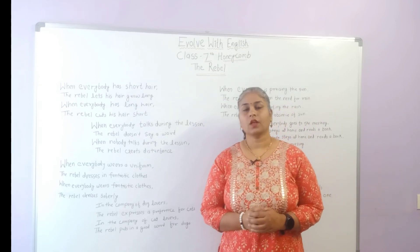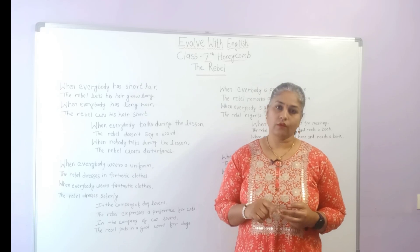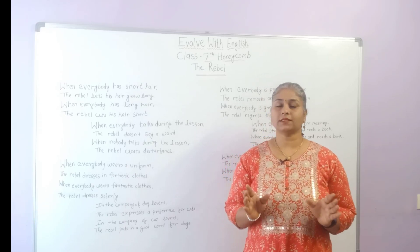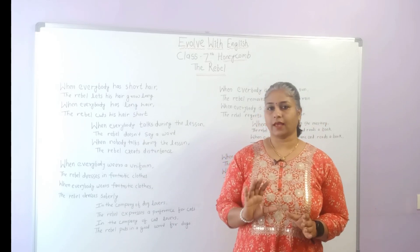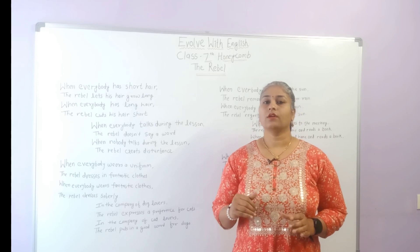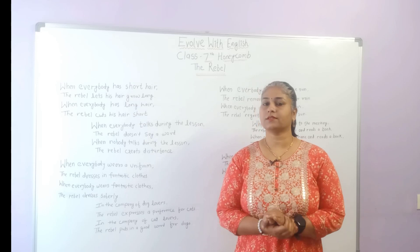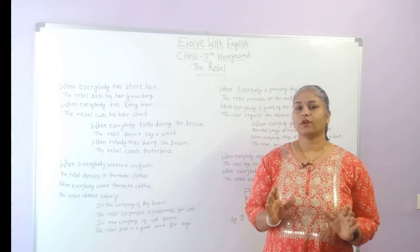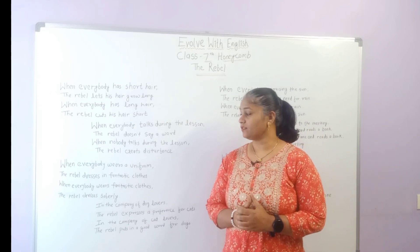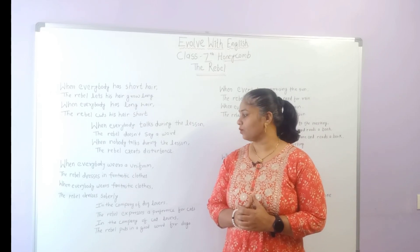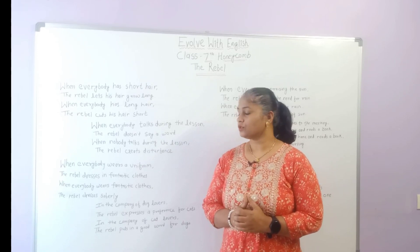In the second stanza, the poet says that when everybody talks, the rebel will remain silent. When everybody is silent, he will express his opinions and create disturbances. In the third stanza, when everybody wears a uniform, the rebel dresses in fantastic clothes. When everybody wears fantastic clothes, the rebel dresses soberly.